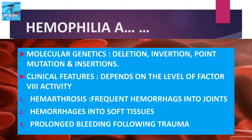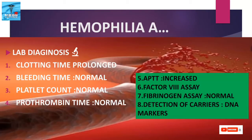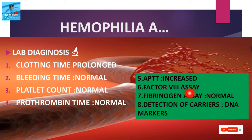Clinical severity depends on the level of factor 8 activity, with normal rights expressed as a percentage. The main clinical presentations are frequent and spontaneous hemorrhages into joints, known as hemarthroses, hemorrhages into soft tissue, and prolonged bleeding following trauma. In lab diagnosis, the clotting time and activated partial thromboplastin time are increased, but the bleeding time, platelet count, and prothrombin time are normal. Fibrinogen is normal, and factor 8 assay is important for diagnosis. Detection of carriers is done using DNA markers.